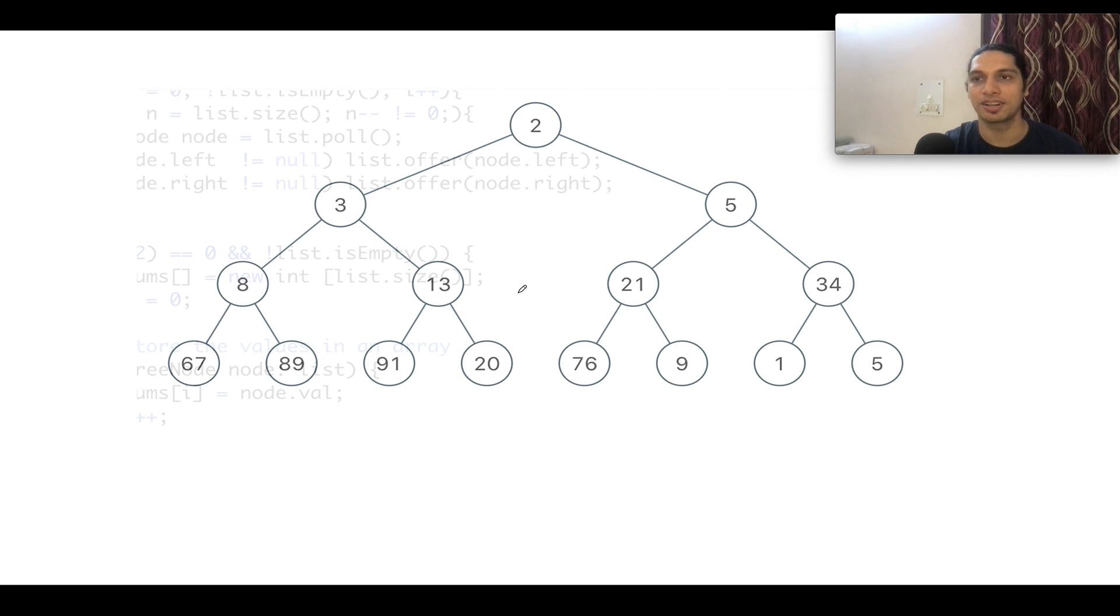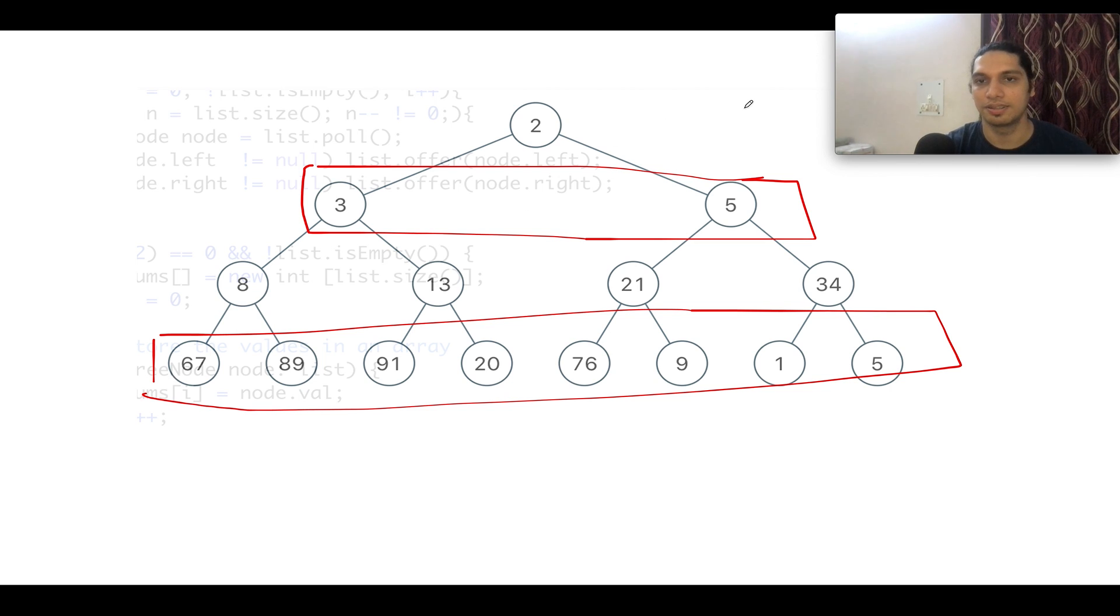I have taken a slightly longer example so that you guys get a good hold of the concept. The perfect binary tree is given to us as 2, 3, 5, 8, 13, 21, 34, 67, 89, 91, 20, 76, 9, 1, 5. We need to reverse the values in the odd levels of the binary tree. What are the odd levels? This was the first level and this was the third level.